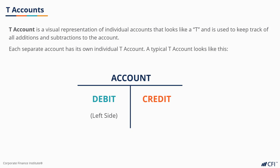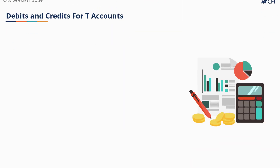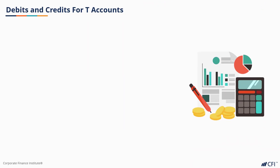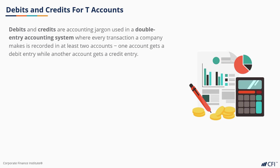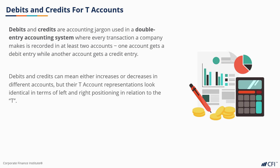Let's recap what debits and credits are. Debits and credits are part of double-entry accounting. Transactions need to be recorded twice — once as a debit and once as a credit. Let's look at some examples of how that works.